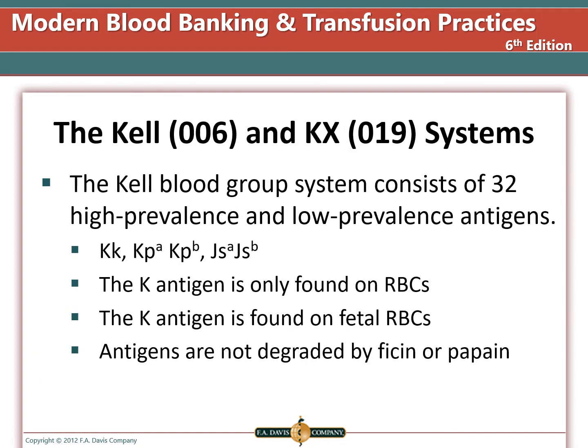The KEL blood group system (ISBT 006) consists of 32 antigens of high and low prevalence. The allelic pairs are Big K and Little k, KPa and KPb, and Jsa and Jsb. High-prevalence antigens are Little k, KPb, and Jsb — most people have these. Low-prevalence antigens are Big K, KPa, and Jsa — most people do not have these. KX is the only antigen in the KX-KEL associated system.